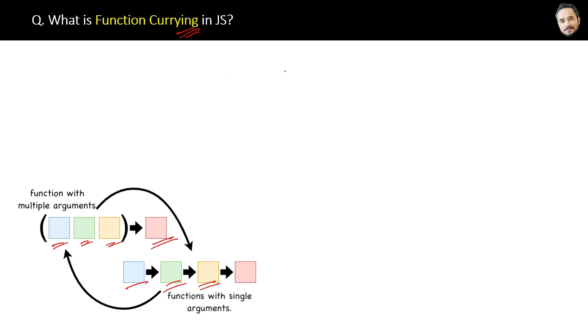Let me show you the definition first and then the code. Currying in JavaScript transforms a function with multiple arguments into a nested series of functions, each taking a single argument.